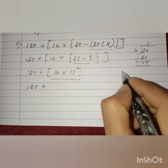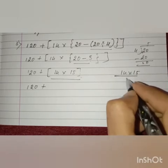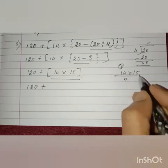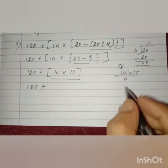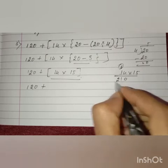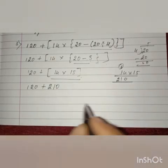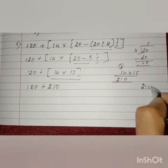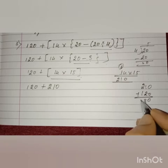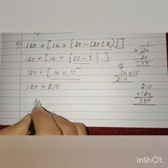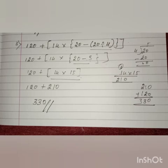Let us multiply 14 into 15: 15 fours are 60, carry 6. 15 ones are 15, plus 6 is 21. So 14 into 15 equals 210. Now let us add: 210 plus 120 equals 330. We got the final answer 330. Got it, children?